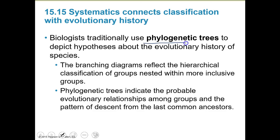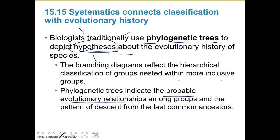Biologists traditionally use phylogenetic trees to depict hypotheses. A phylogenetic tree is almost like a family tree between species, but it is a hypothesis - none of these things are 100% correct. We use them based on what data we have and form a fairly educated guess about how species are interconnected. The main point to remember is that these are hypotheses, not fact. There is room for error. Phylogenetic trees indicate the probable evolutionary relationships among groups and patterns of descent from the last common ancestor.